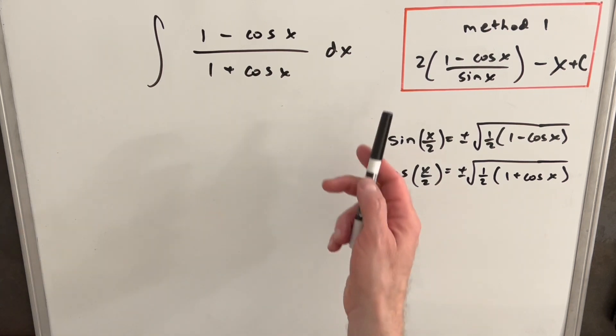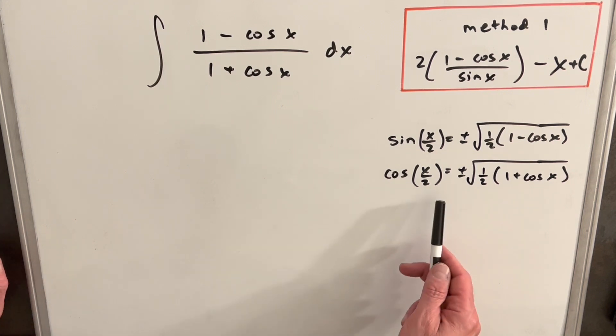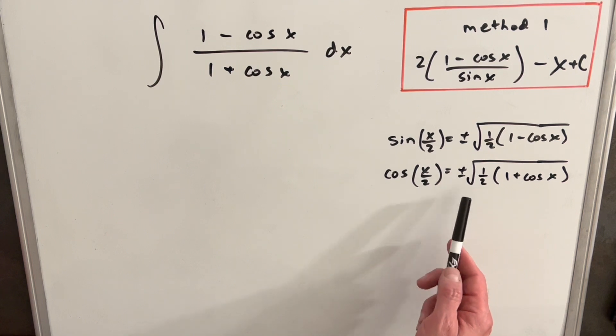Okay, so I've just captured my method 1 solution up here so I don't forget it. And then I've also, over here, written down my half-angle formulas for sine and cosine. These two identities are going to be useful for my method number 2.